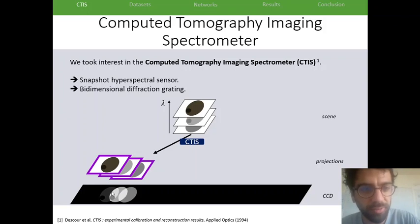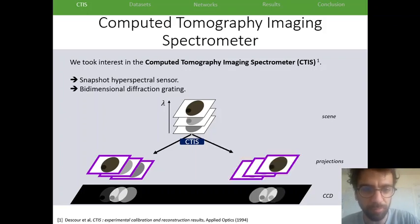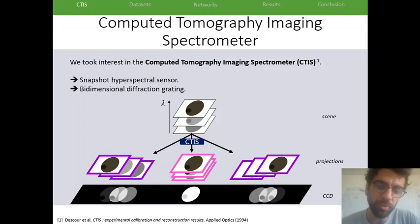The particularity of the CTIS is that this diffraction is done in several directions, and so the projections are going to be in different spread directions. And so on the CCD you'll get different information with different overlaps. And there's also a projection with no spatial displacement of the scene, which conserves the spatial information of the scene.